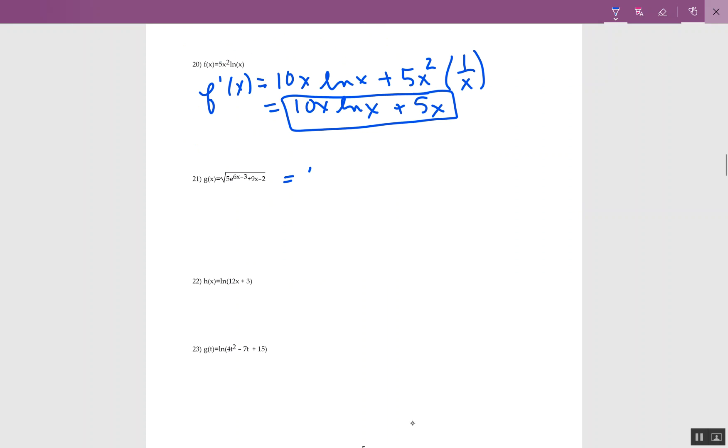So I have 5e to the 6x minus 3 plus 9x minus 2 to the positive 1 half power. When I take the derivative, the first thing that happens is that 1 half comes down. I rewrite everything exactly as it was inside. And now my new power is negative 1 half.